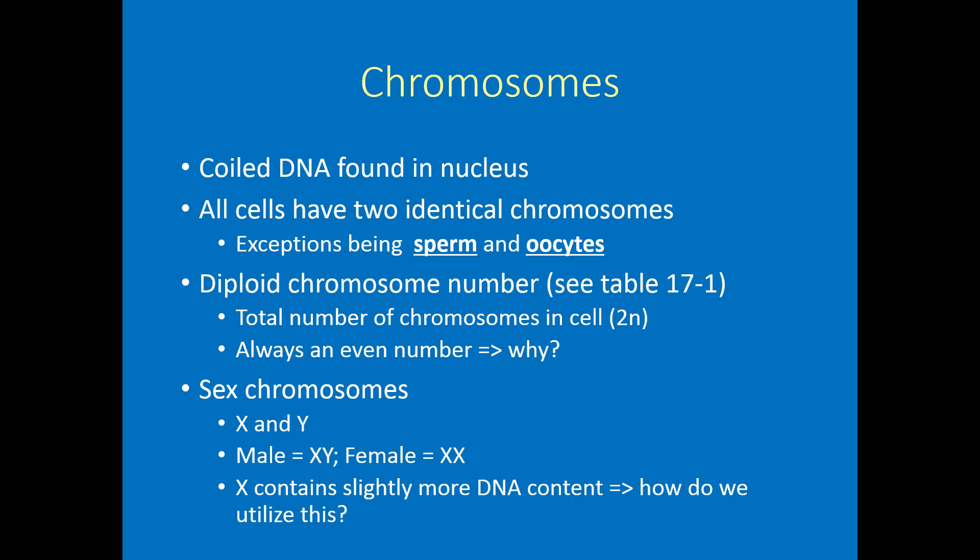First and foremost, just a quick review on chromosomes. Chromosomes are our DNA in coiled form within the nucleus of all our mammalian cells. All of our cells have two copies of all the chromosomes. The only exceptions are our gametes — our spermatogonia, oogonia, and oocytes. The diploid number of chromosomes is the total number in a normal cell. For example, humans have 23 chromosomes, each in paired form, giving a diploid number of 46.